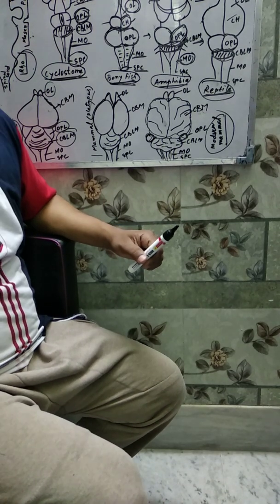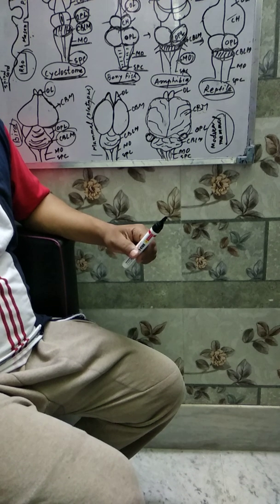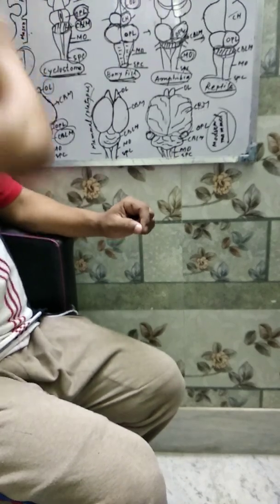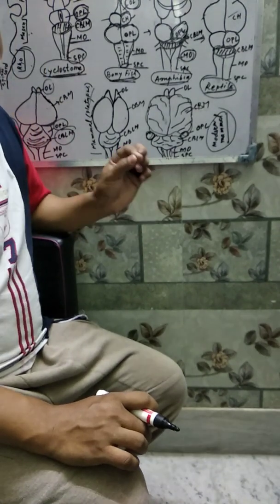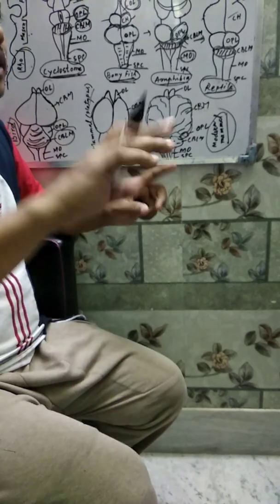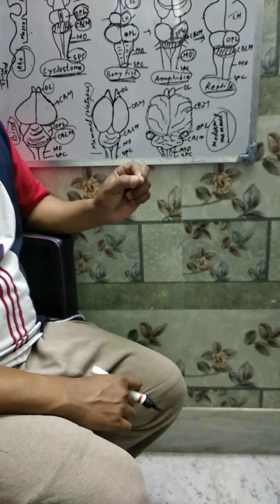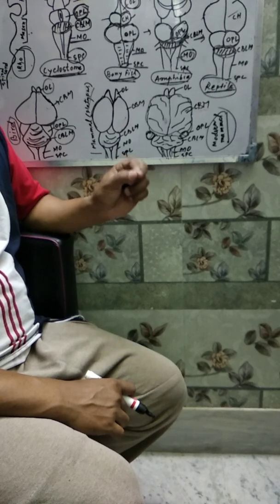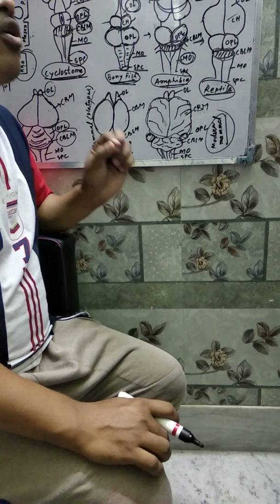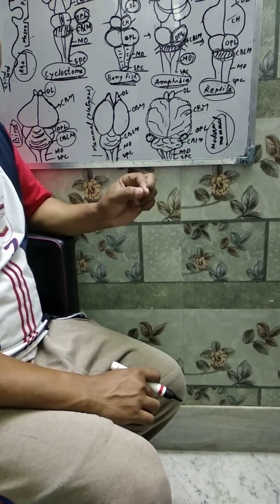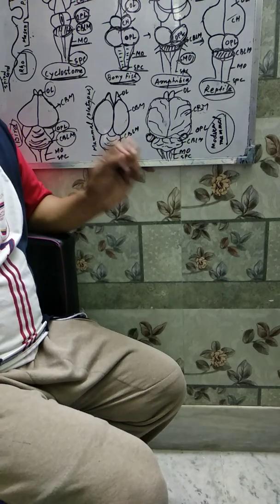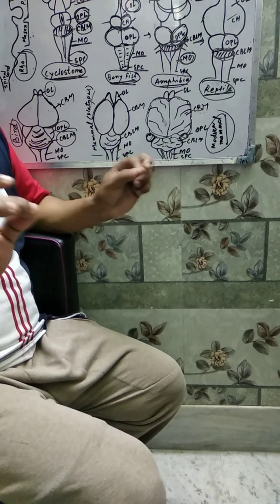Now we discuss the brain of reptiles. Reptiles are more developed vertebrates and the brain is more developed. The telencephalon, part of the forebrain, becomes the largest part of the brain and covers almost the entire forebrain region. The olfactory lobes tend to be larger than in amphibians, and the olfactory ducts are long. Reptiles have a Jacobson's organ for smelling, and fine vomeronasal nerves from this organ go to the olfactory bulbs.